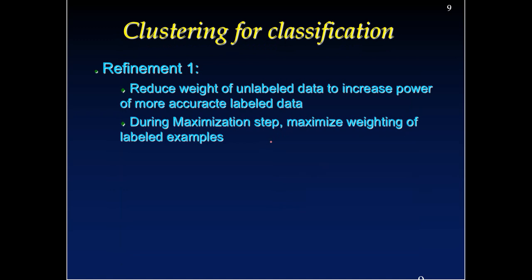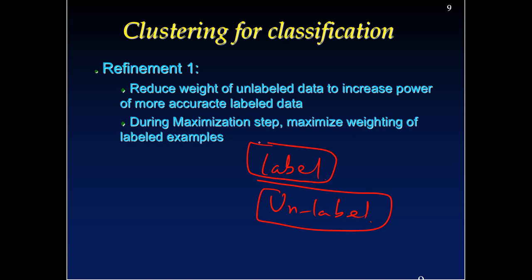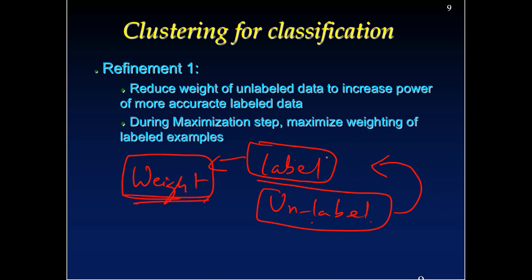One issue with this approach is that you are giving the same importance to labeled data as to unlabeled data, which is not ideal — labeled data is inherently better quality. So when retraining your model, you should not give equal weight to unlabeled data. Higher weight should be given to labeled data in the optimization algorithm, as this will improve accuracy.